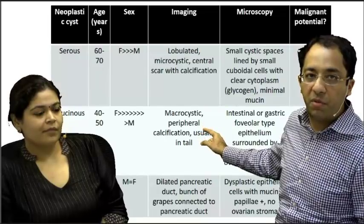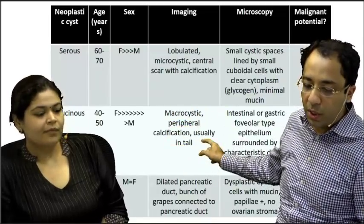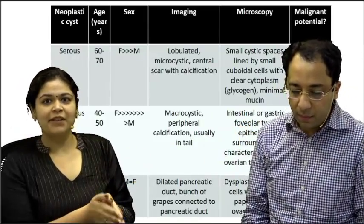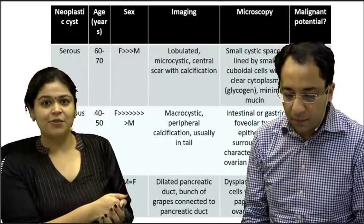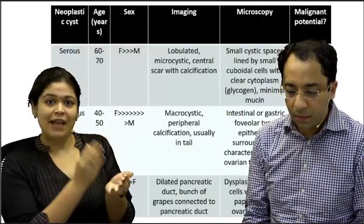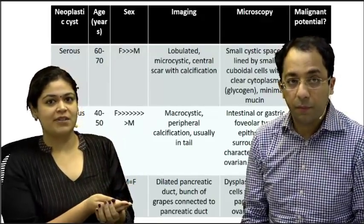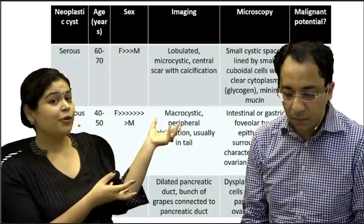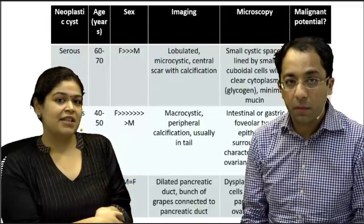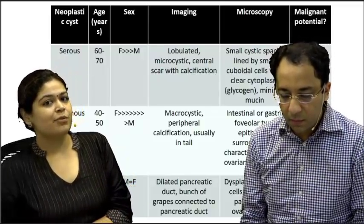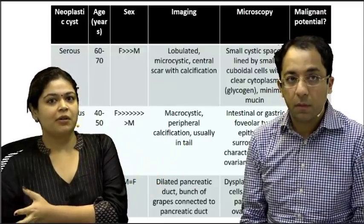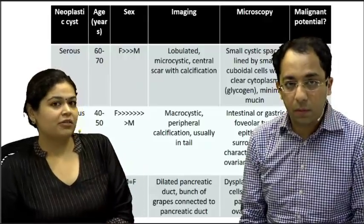In mucinous microscopy, you'll have columnar epithelium — which could be intestinal type, gastric type, or pre-pyloric type — but it will always have mucin, and most importantly, ovarian stroma is diagnostic. The cystic fluid in mucinous cysts will have elevated levels of CEA. We've also seen KRAS mutations in these lesions, which may explain their malignant potential, as KRAS is one of the most important genes involved in pancreatic cancer.